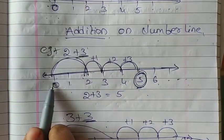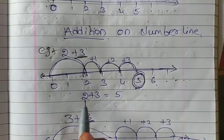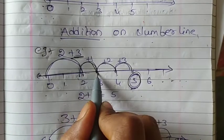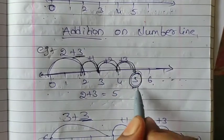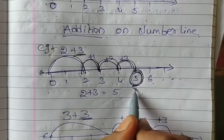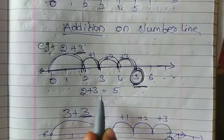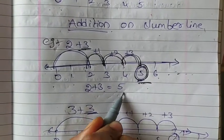Addition we have to move from left to right. That is 2 plus 1 is 3, plus 2 is 4, plus 3 is 5. The final answer is 5. 2 plus 3 is equals to 5.